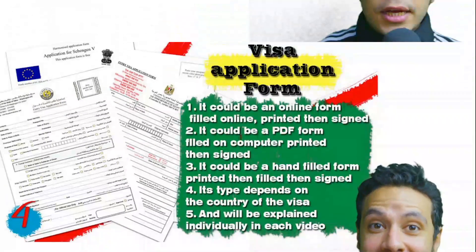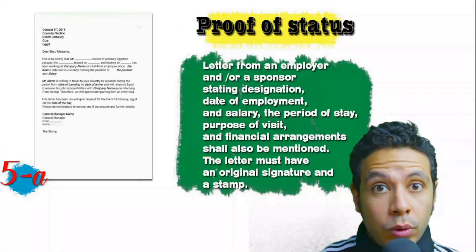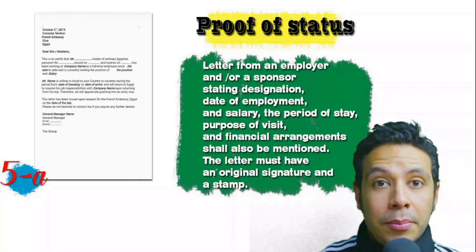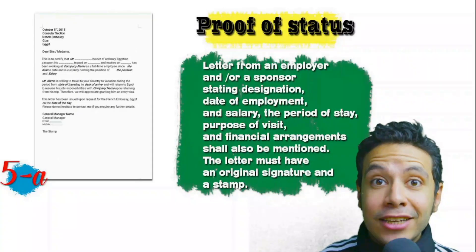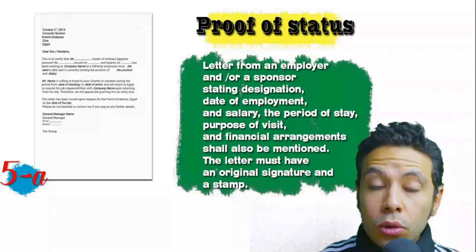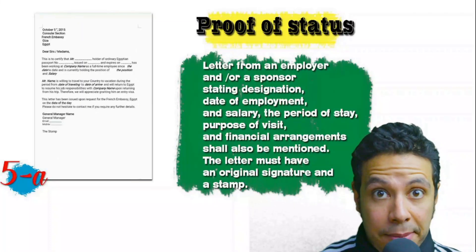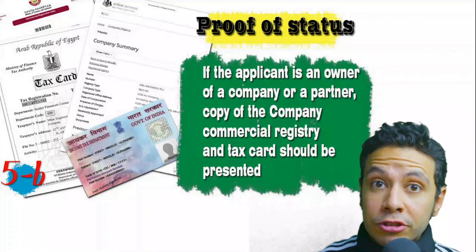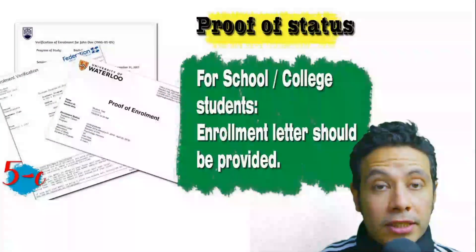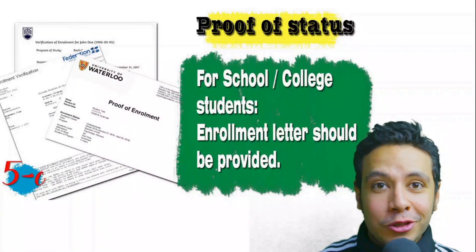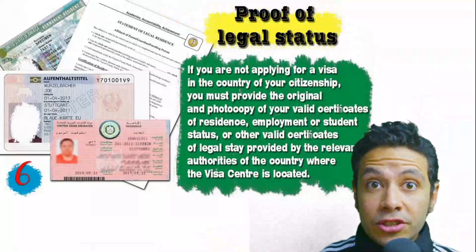In most visa application processes you must provide proof of status. If you are an employee, you need a letter from your employer or HR department mentioning your name, work details, salary, address, and contact number — with an original signature and stamp. If you own a business, provide your commercial registry and tax card. If you are a student, provide an enrollment letter from your school or university.